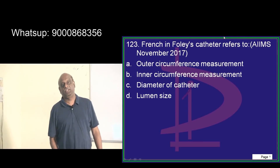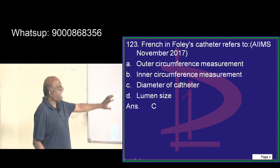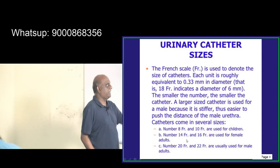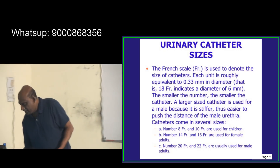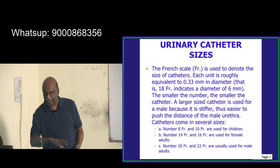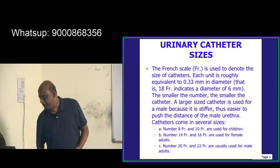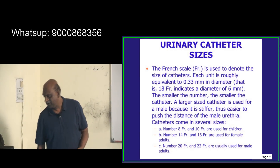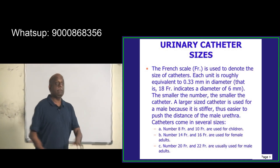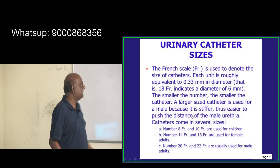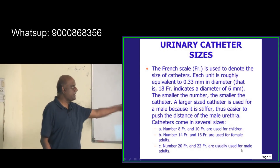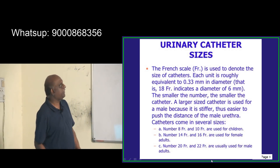Regarding Foley's catheter French sizing — French refers to the diameter of the catheter, which is very important. Number 8 and 10 French are used for children. Number 14 and 16 French are used for female adults. Number 20 and 22 French are usually used for male adults.